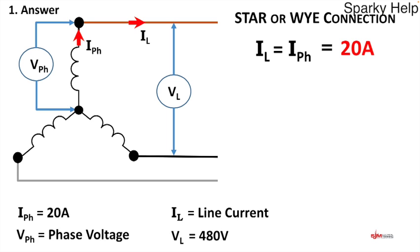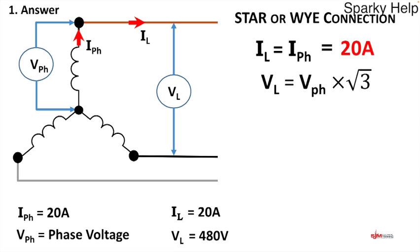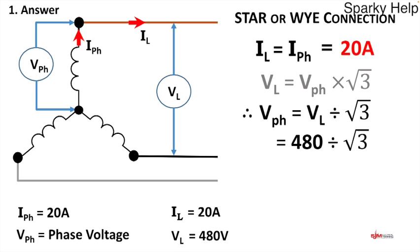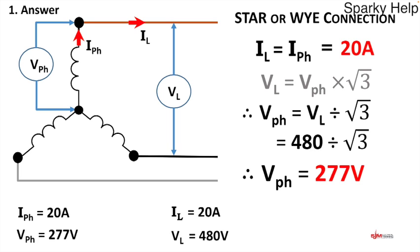We need to work out the line current. Since we have the phase current, il equals ip, so il is 20 amps — already given. Next, vl and vp: we've already been given vl = 480 volts, so we rearrange the formula: v-phase equals vl divided by the square root of three. Putting the figures in: 480 divided by root three gives us a phase voltage of 277 volts. I hope you got those answers!